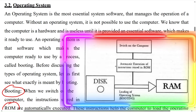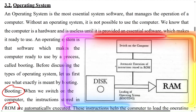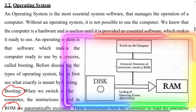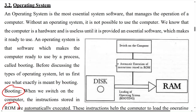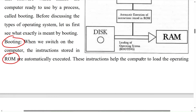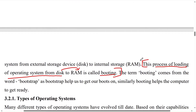The process involves: automatic execution of instructions stored in ROM, then loading the operating system from disk — that is called booting. The data available on disk is sent to RAM. This is the process.